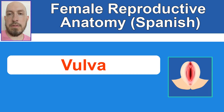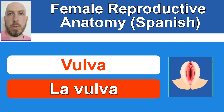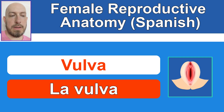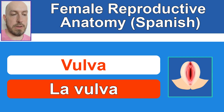Next is vulva. How do you say vulva in Spanish? La vulva. La vulva. As you can see, it's spelled exactly the same, so you just have to pronounce it using the correct vowel sounds and other sounds in Spanish.